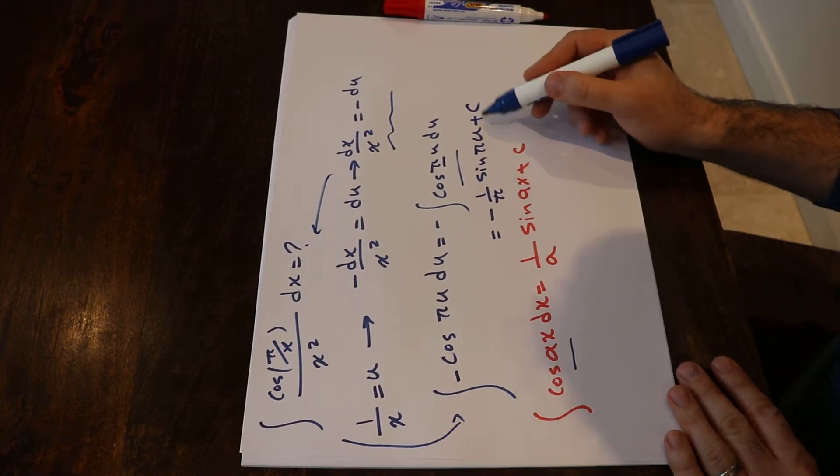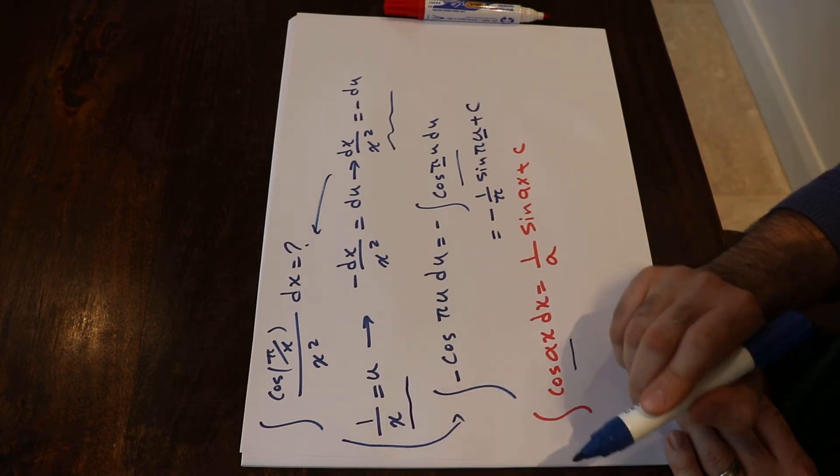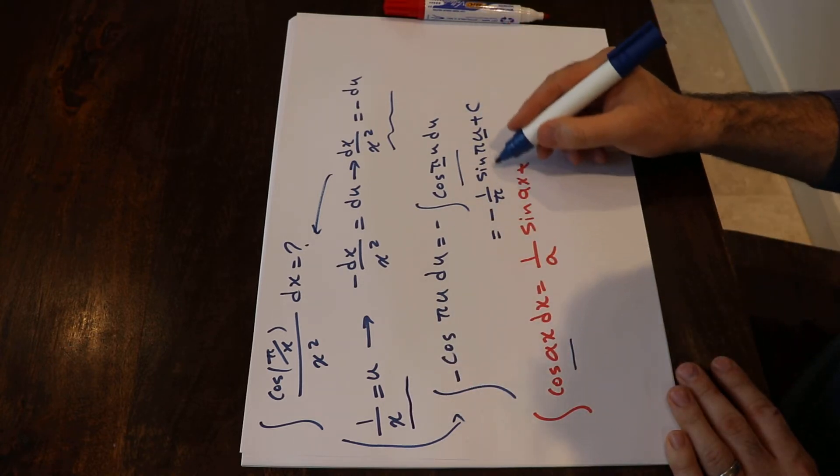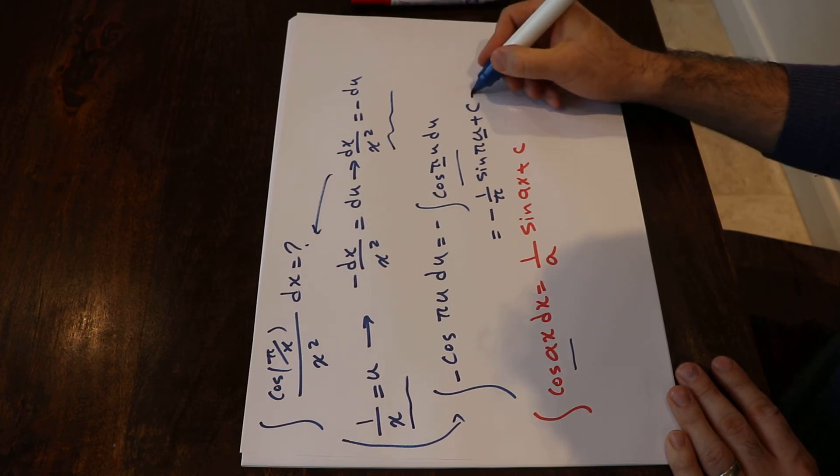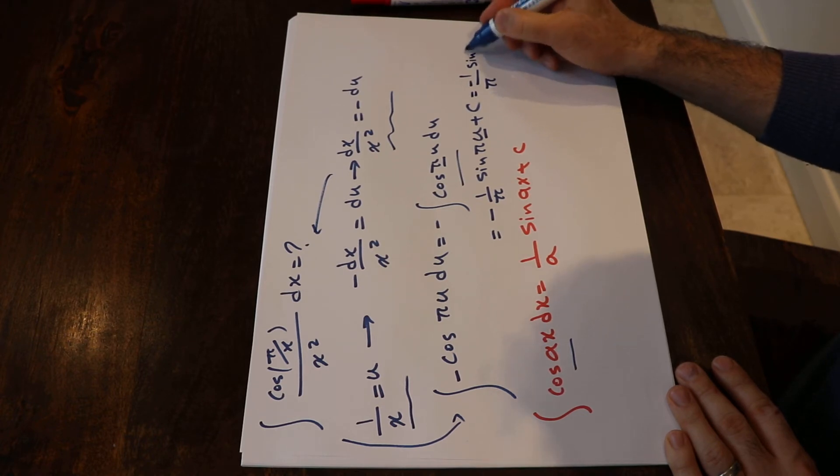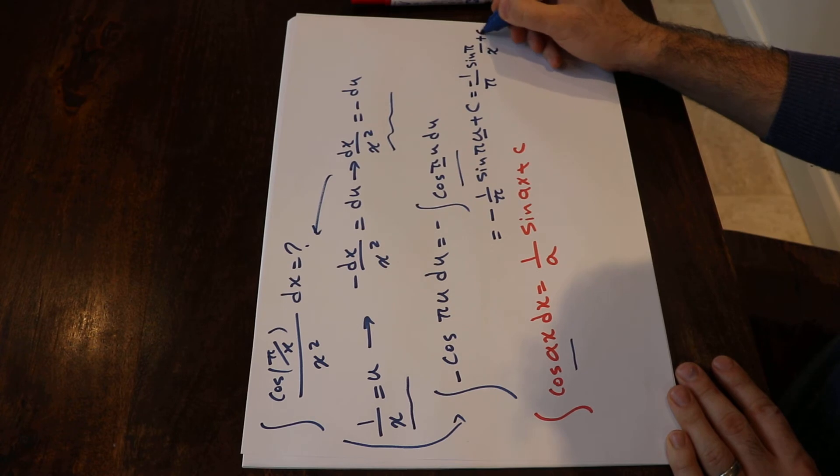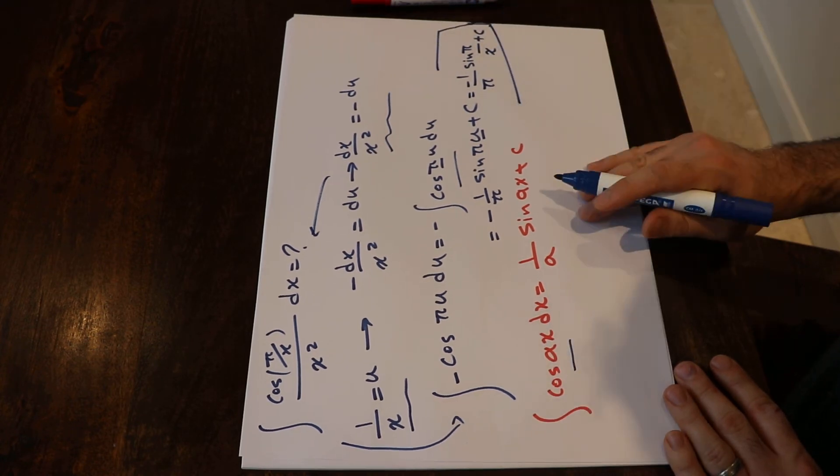All you need to do at this stage is instead of u you put the definition you used at the very beginning. Therefore this integral will be equal to minus 1 divided by π sin π—instead of u I put 1 divided by x—plus c. And that is the solution to this integral.